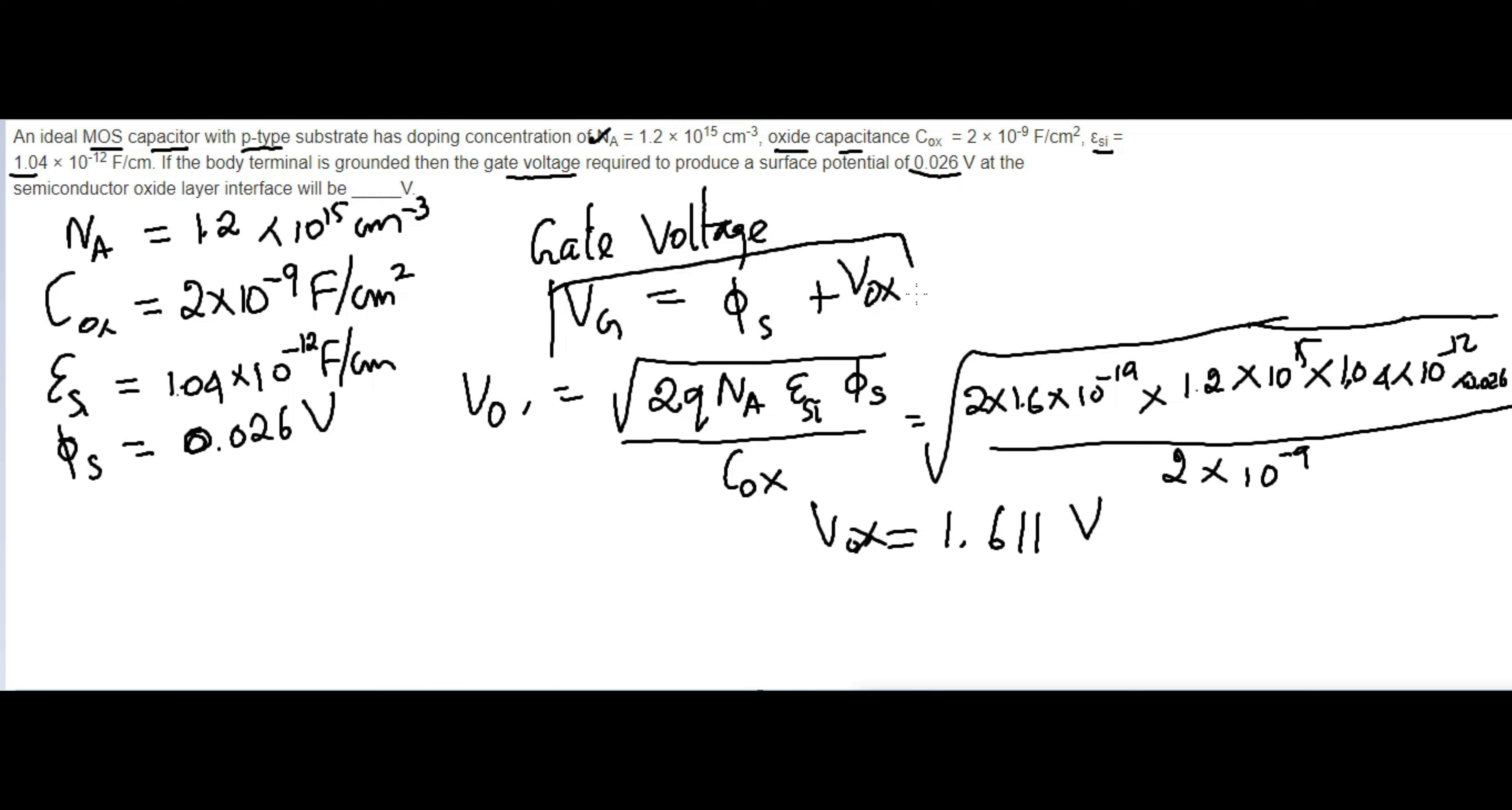We can now complete the calculation for gate voltage. So VG = φs which is 0.026 plus VOX which is 1.611, which equals 1.637 volts.